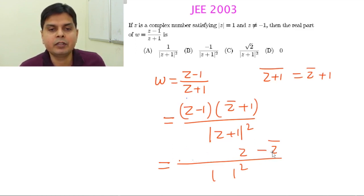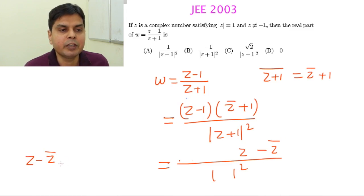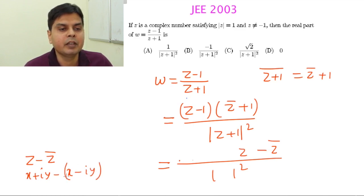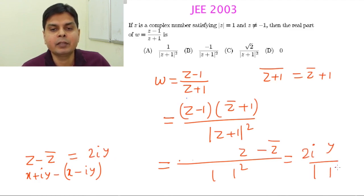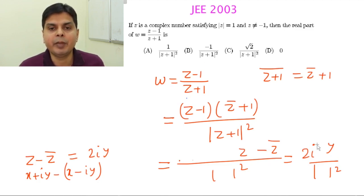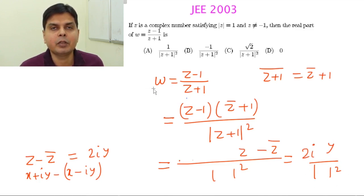Ultimately in the numerator we are left with Z minus Z bar, and we need to recognize what Z minus Z bar is for any complex number. If Z equals X plus iY, then Z conjugate equals X minus iY. Subtracting, the X terms cancel, so Z minus Z bar equals 2iY. This means the numerator is 2iY divided by a real number, making W purely imaginary.